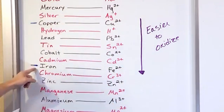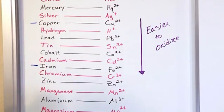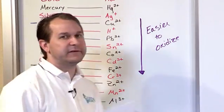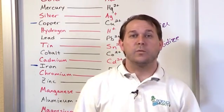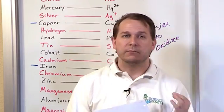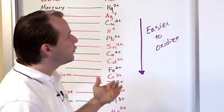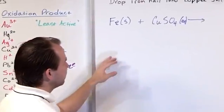So because iron is lower on the chart than copper, iron wants to lose its electrons more than copper does. It wants to be oxidized, which means it wants to react more than copper does. So iron wins.